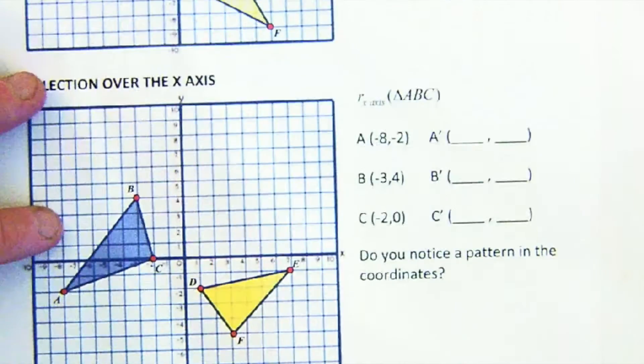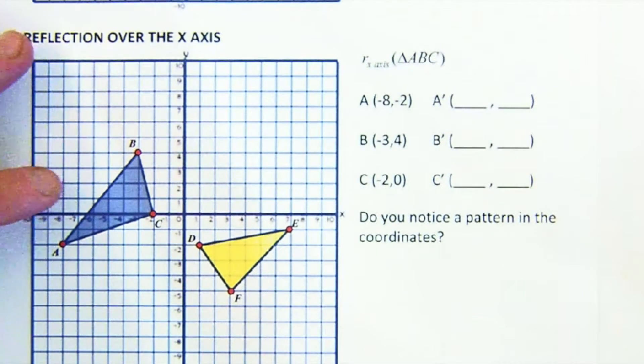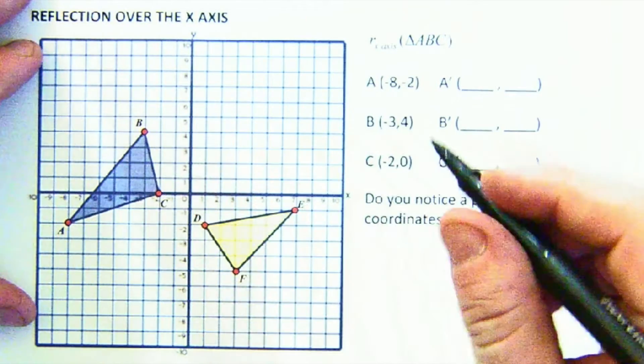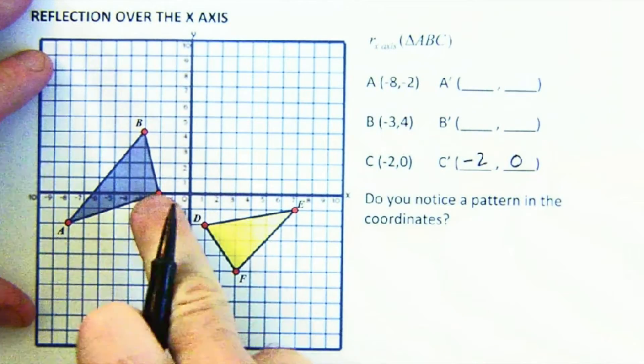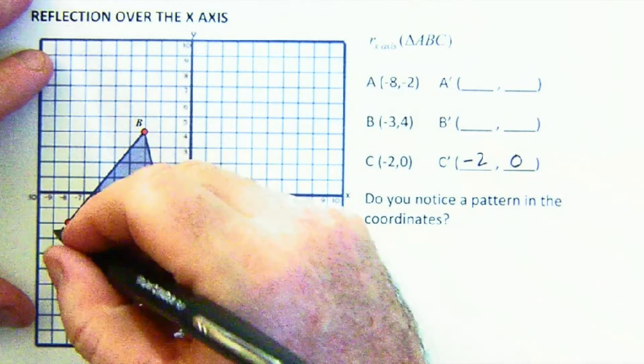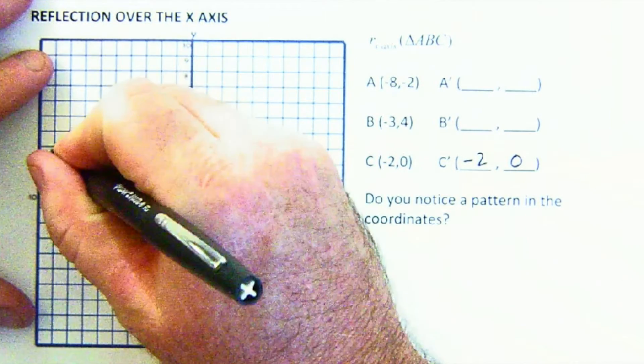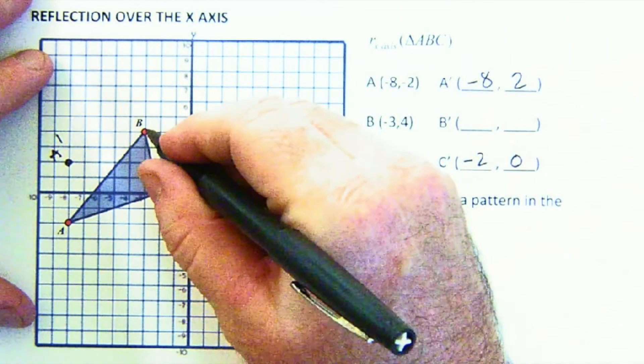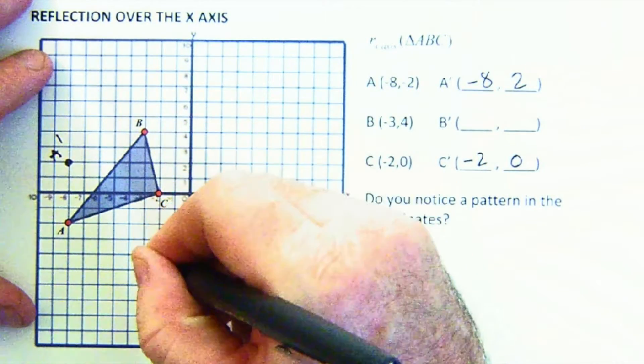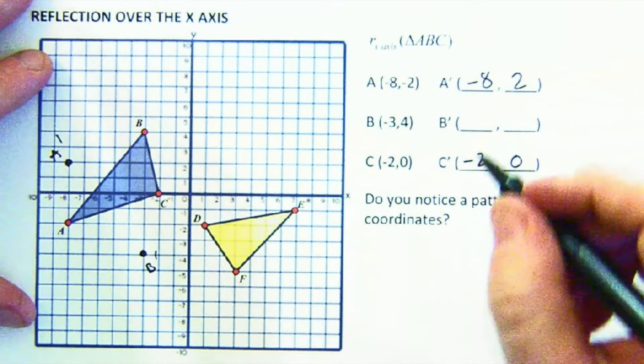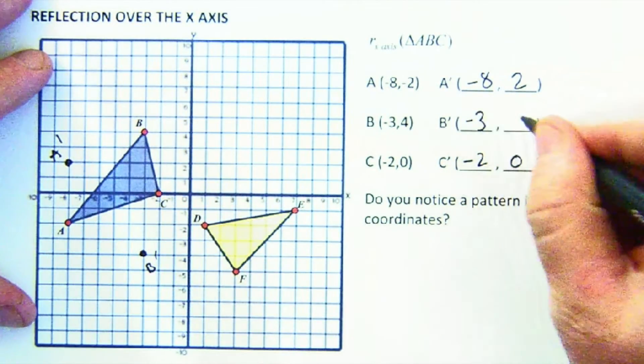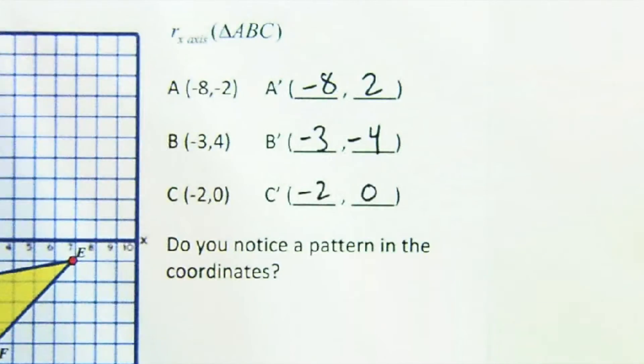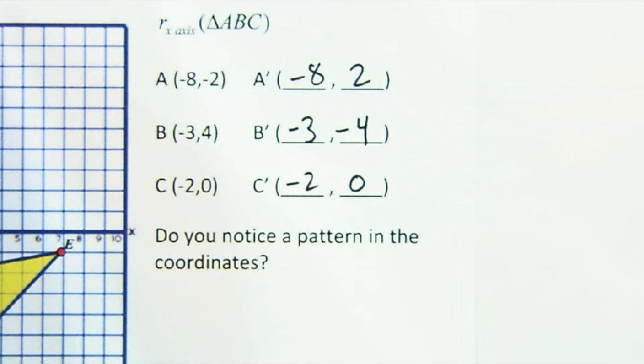Let's do a reflection now in the x-axis. I bet you can already guess what's going to happen here, but let's do it anyways. C maps to itself at negative 2 and 0, because it's on the line of reflection. A maps to this location, A prime, which is negative 8, positive 2. B is 4 above, so it goes to 4 below B prime at negative 3, negative 4. Let's look closely at the coordinates and see what they tell us. You can see what happens.